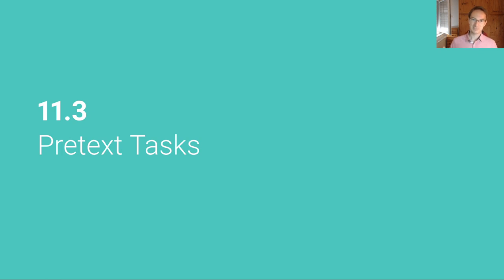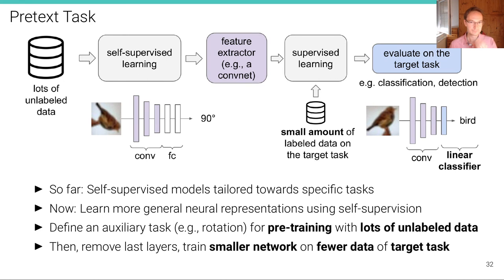This unit and the last unit of this lecture both cover pretext tasks. The last category of pretext tasks — the so-called contrastive tasks — have developed into their own field, which is why they are separated. Both are effectively pretext tasks. So far we have looked at self-supervised models tailored towards specific downstream tasks such as monocular depth estimation, optical flow, or scene flow estimation.